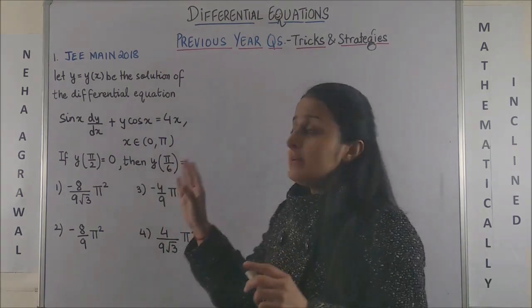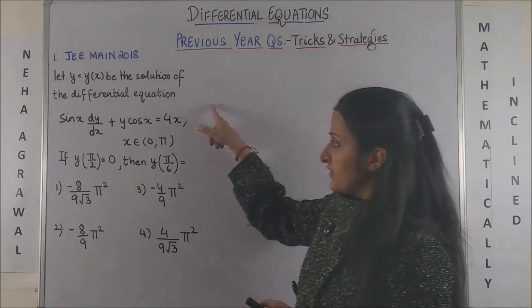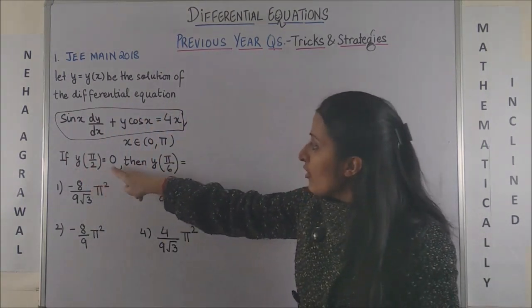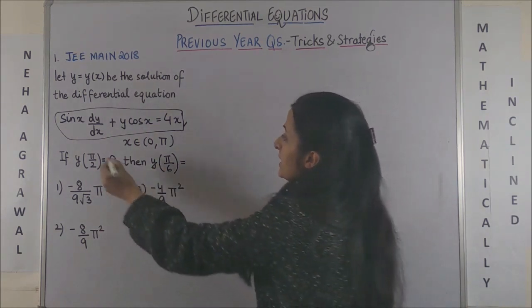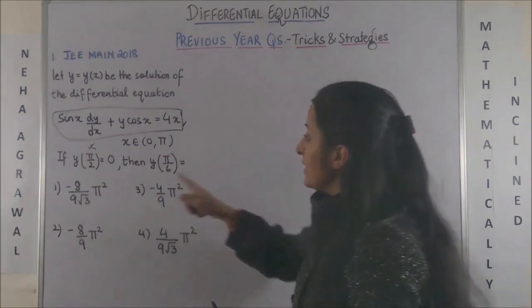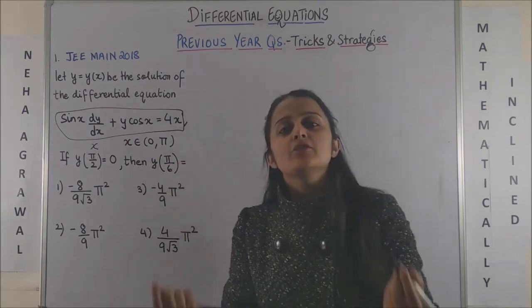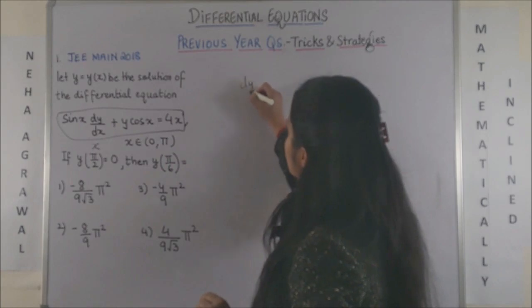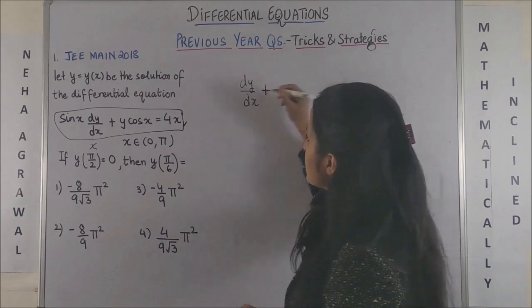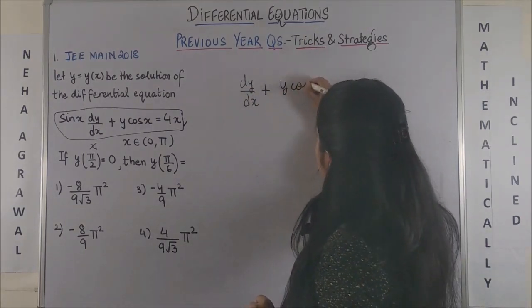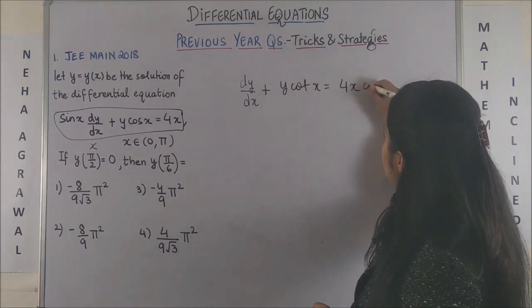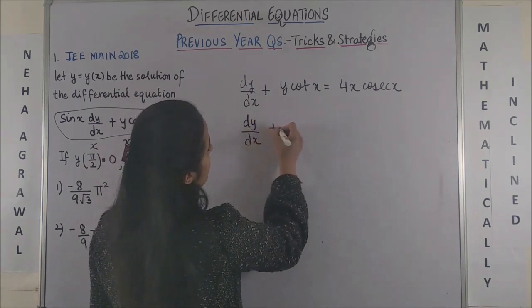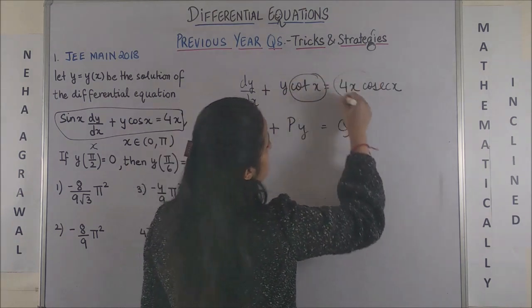Coming to JEE Mains 2018: let y = y(x) be the solution of the given differential equation. You are given y(π/2) = 0, meaning when x = π/2, y = 0. You have to find y at x = π/6. To solve, express everything in terms of dy/dx — divide throughout by sin x. We get dy/dx plus y·(cos x / sin x) = 4x / sin x, which becomes dy/dx plus y·cot x = 4x·cosec x.